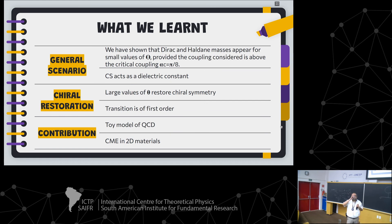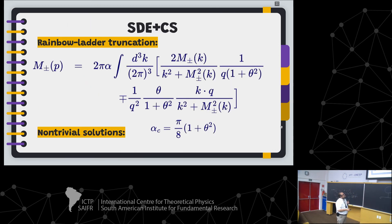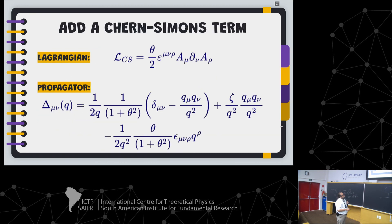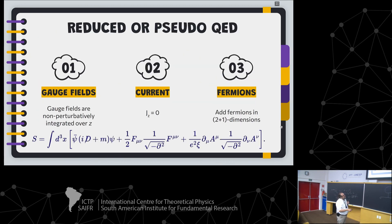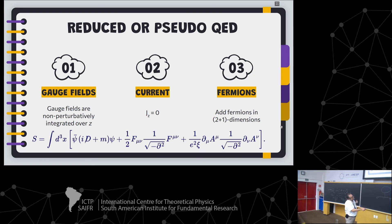Thank you, Alfredo. I did not quite understand the meaning of the zeta parameter that plays the role of gauge fixing and is non-local. Which is the idea behind it? The zeta parameter is related to the xi parameter, which comes with the gauge fixing, but the gauge-fixing term comes with this square root of the D'Alembertian — it includes the inverse. That is how the connection comes in.